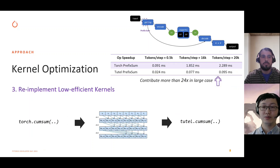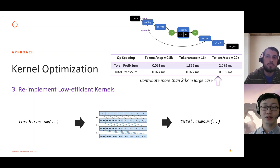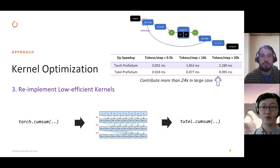The third optimization is kernel optimization, which is a common approach to further excavate MOE performance. We profiled some low-efficiency kernels in MOE critical paths and re-implemented these kernels. For example, CumSum is a typical slow operator. TUTO re-implements this kernel using a log-based method. It contributes more than 24 times speedup compared to the original. These three optimizations are for computation on a single GPU, and my colleague Rafael will talk about optimization on networking next.